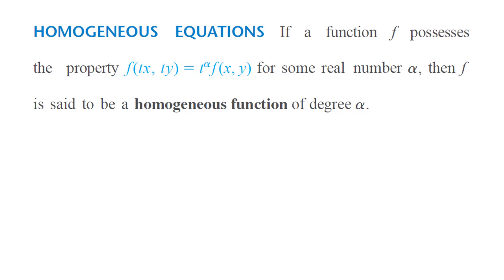Introduction to homogeneous equations: if a function f has the property that when you substitute tx and ty for x and y it becomes t to the power alpha times f of x and y, then you say that f is a homogeneous function of degree alpha.